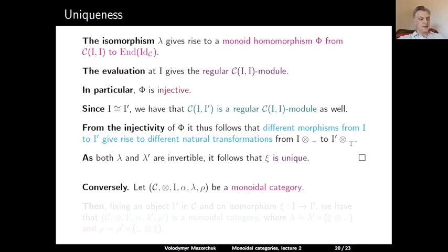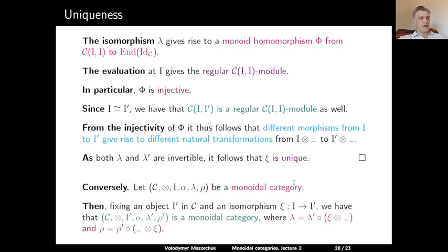Conversely, given a monoidal category C, tensor product, I, alpha, lambda, rho, fixing an object I prime in C and an isomorphism xi from I to I prime, we obtain a new monoidal category C, tensor product, I prime, alpha, lambda prime, and rho prime, where lambda prime and rho prime are defined by: lambda equals lambda prime after (xi tensor id), and rho equals rho prime after (id tensor xi).